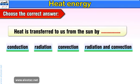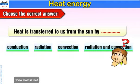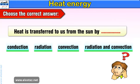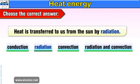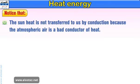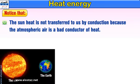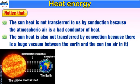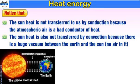Choose the correct answer: Heat is transferred to us from the sun by conduction, radiation, convection, or radiation and convection. Well done — Heat is transferred to earth by radiation only. Note that the sun's heat is not transferred to us by conduction because the atmospheric air is a bad conductor of heat. The sun's heat is also not transferred by convection because there is a huge vacuum between the earth and the sun — no air in it.